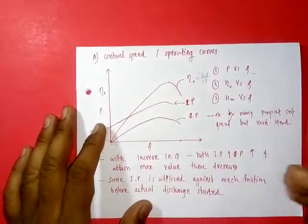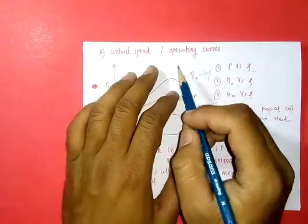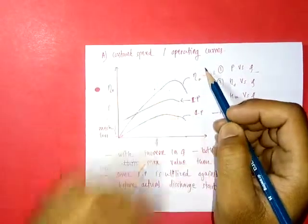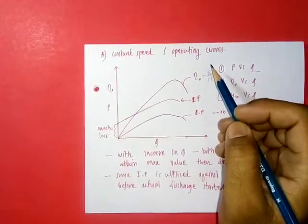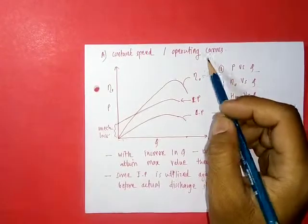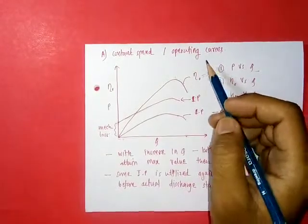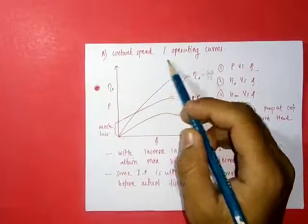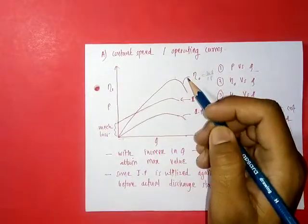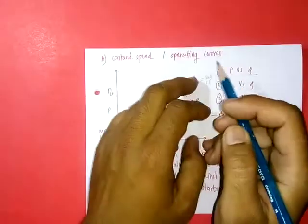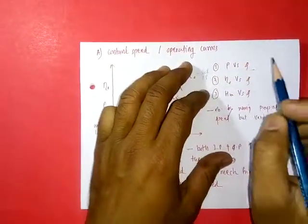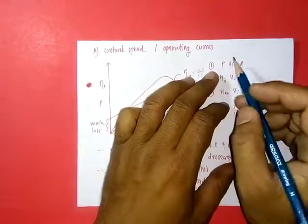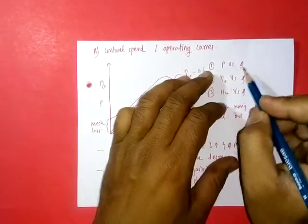The first type is constant speed curves, also called operating curves, because we operate the pump at constant speeds. Under these categories there are three graphs: first is variation of power versus discharge, second is variation of overall efficiency versus discharge, and third is variation of head versus discharge.